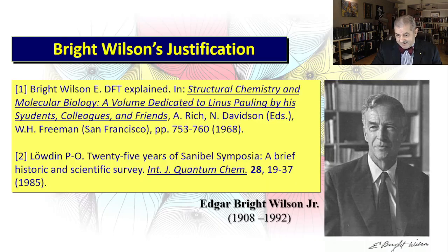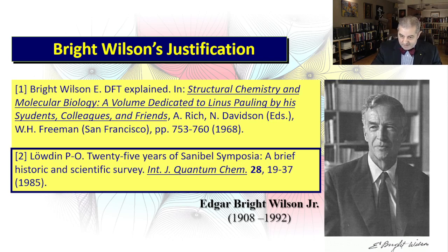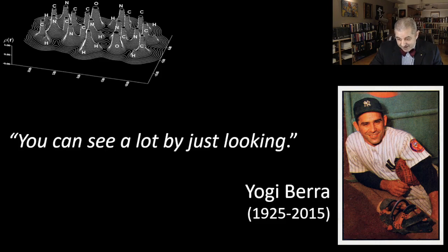The Bright-Wilson justification goes like this. There are two references related to this justification of the Hohenberg-Kohn theorem. The one most often quoted is not the correct one; the correct reference is Laudin, where he reminisces and recounts what happened at the Sanibel symposium. As Yogi Berra famously said, 'You can see a lot by just looking,' and that's what we do in the first step of the Bright-Wilson justification — we just look at the electron density.